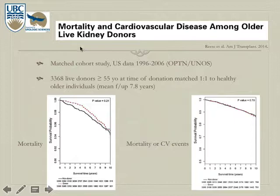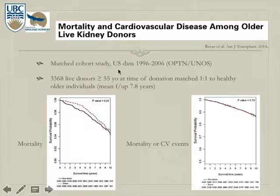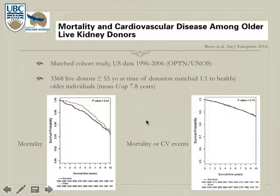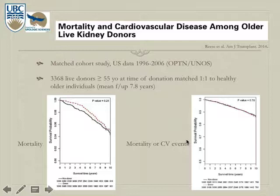A 2014 study examined mortality and cardiovascular disease among older live kidney donors — an important population given the trend toward operating on older people. Donors older than 55 from 1996 to 2006, totaling 3,400, were matched to the general population with a mean follow-up of 7.8 years. No significant difference in mortality was found at 10 years. The combined secondary outcome of mortality or cardiovascular events also showed no difference at 10 years, suggesting donation does not significantly affect mortality or cardiovascular risk in this older group.